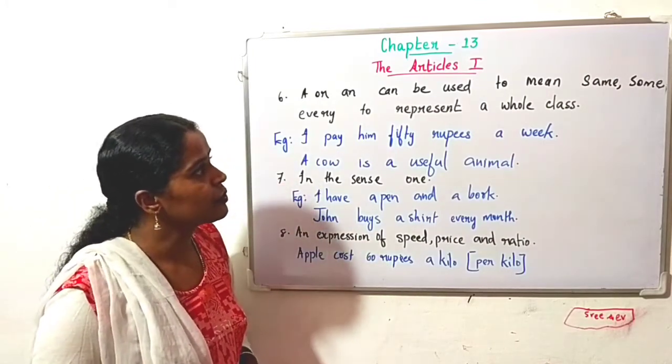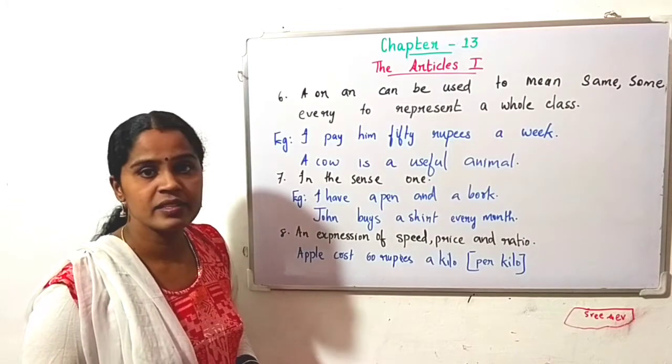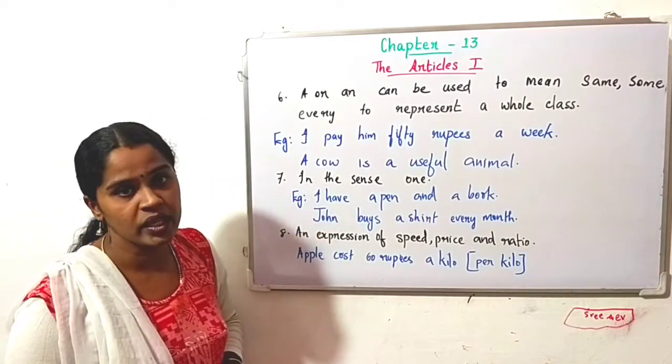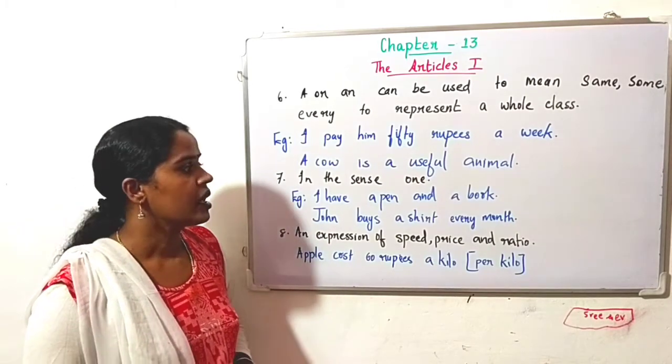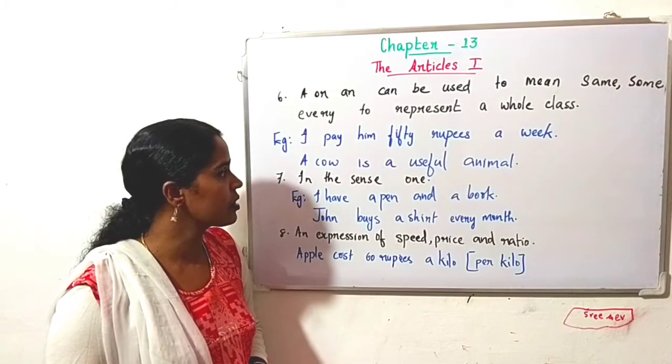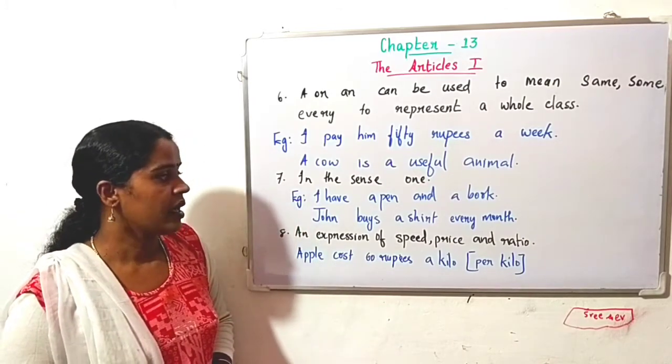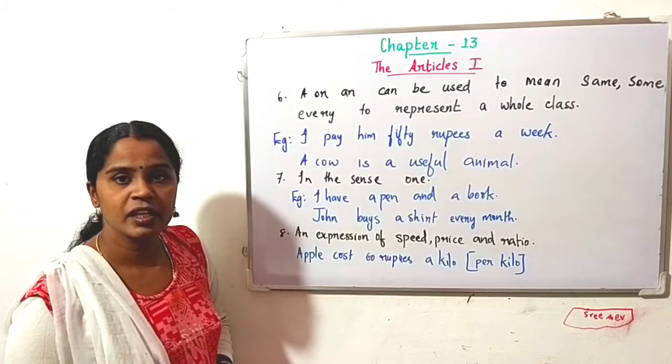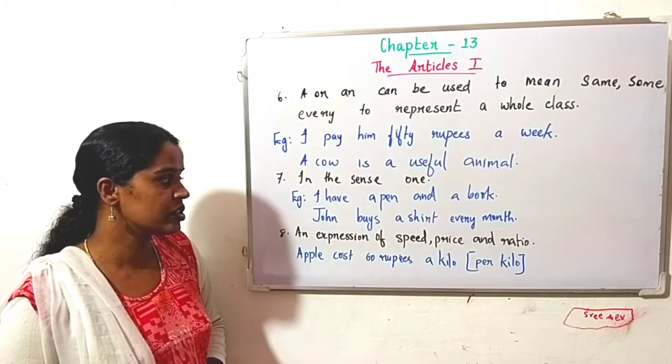'A' or 'an' can be used to mean same, some, every, to represent a whole class. For example: I pay him 50 rupees a week. Here, for every week I pay 50 rupees to him. A cow is a useful animal. Here 'a' doesn't mean one, it means cows in general. Seventh one in the sense of one. I have a pen and a book - one pen and one book. So here 'a' is representing the number one. John buys a shirt every month.